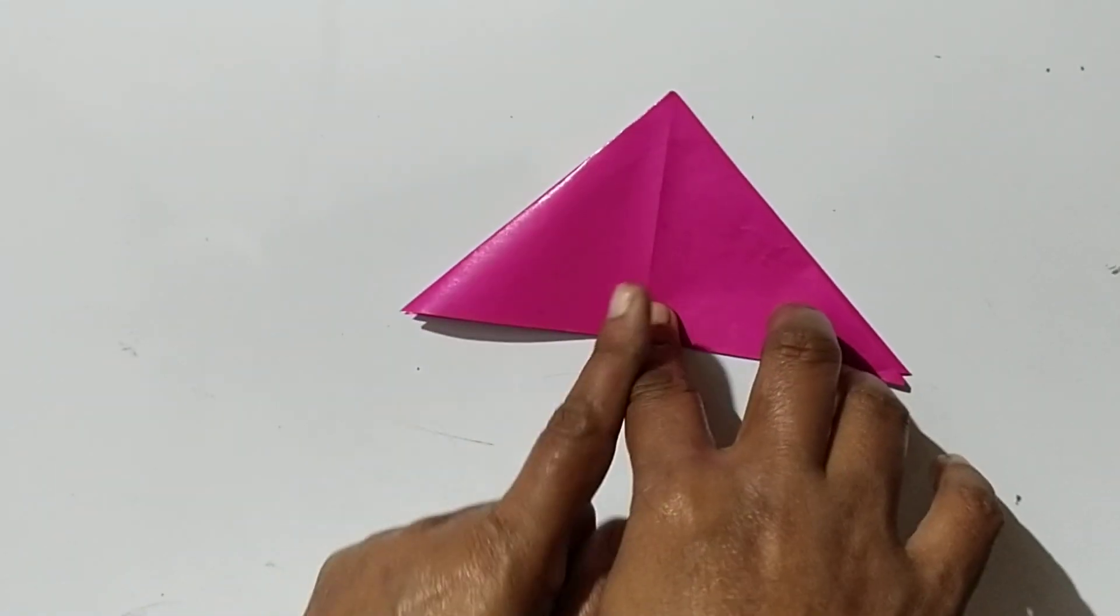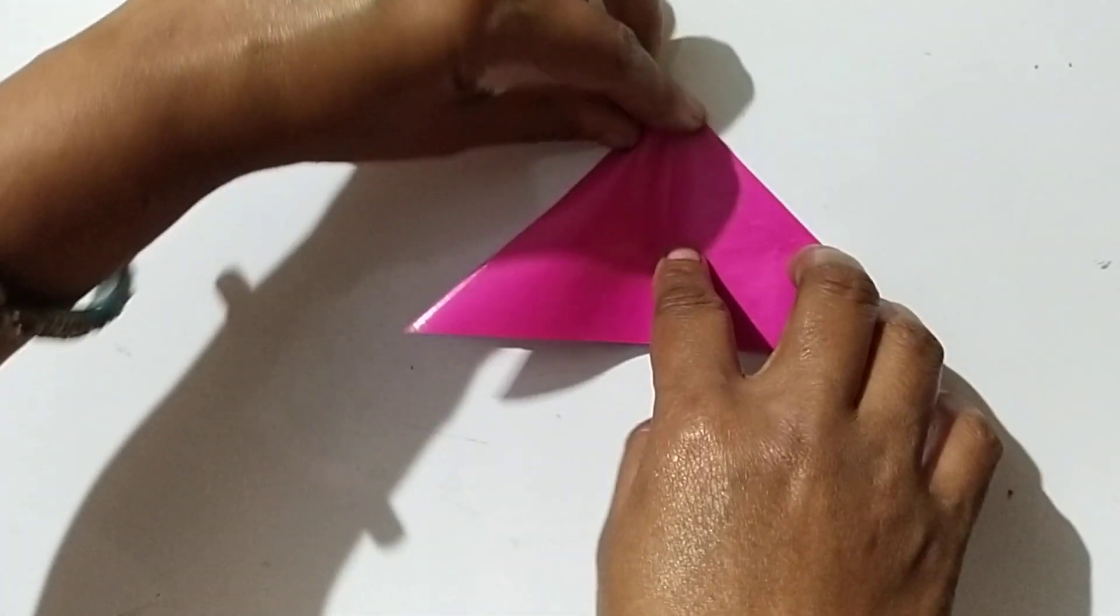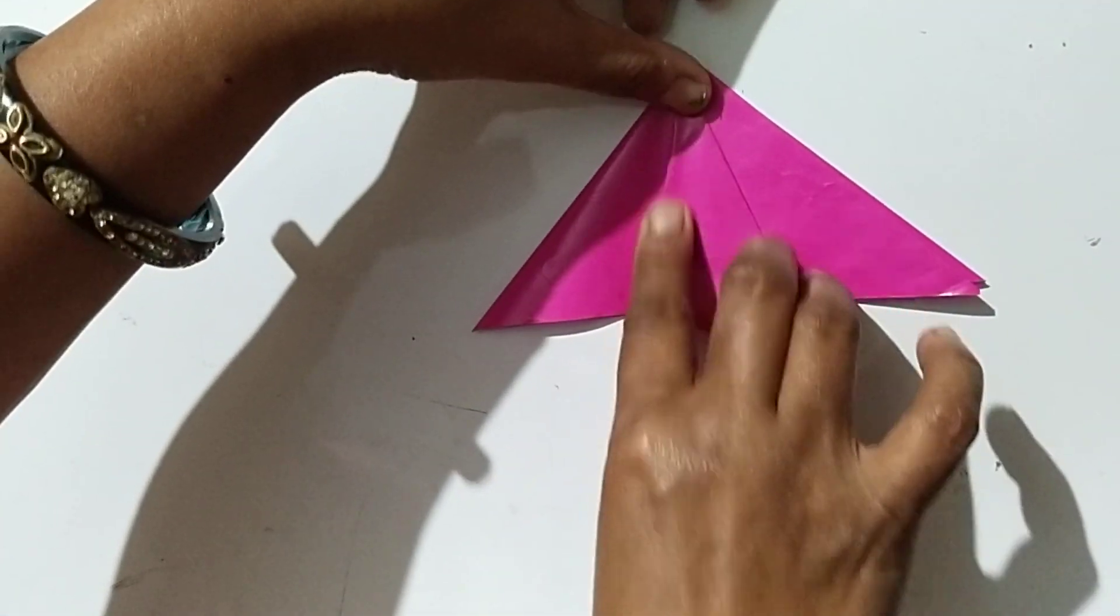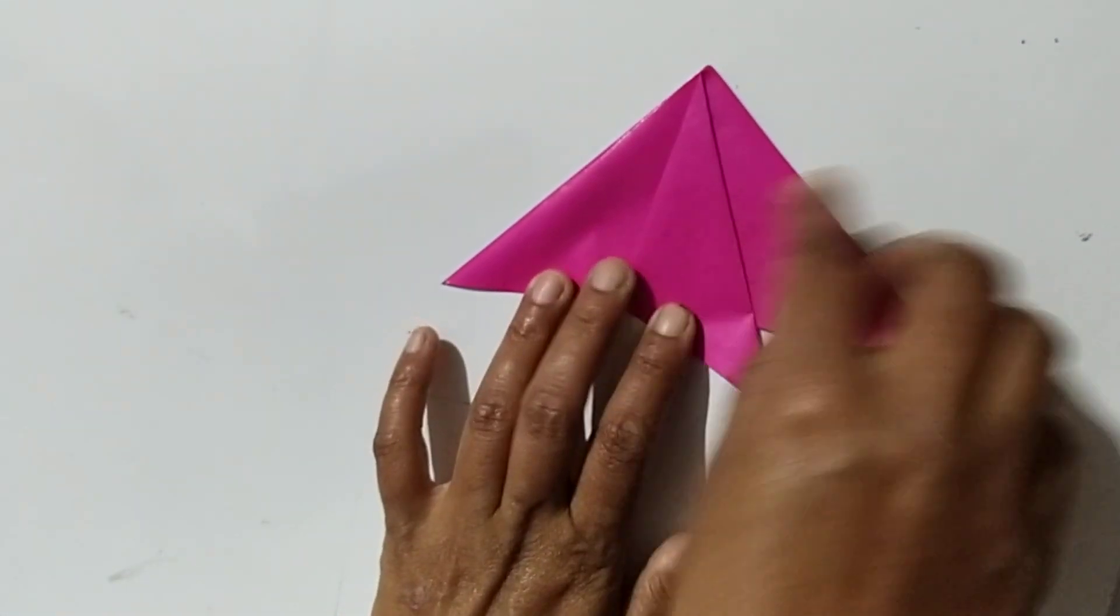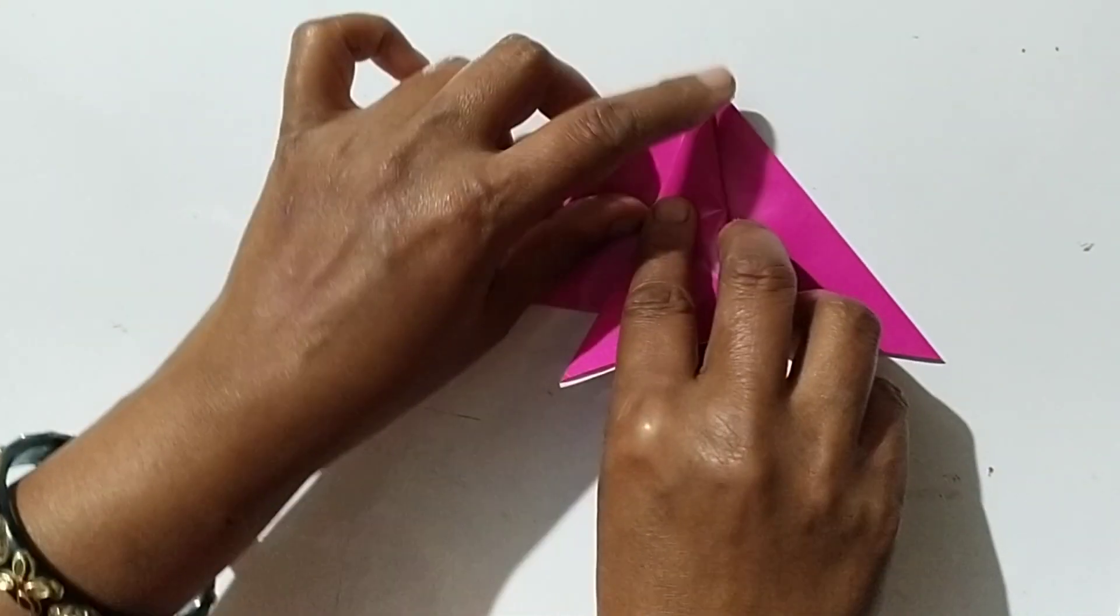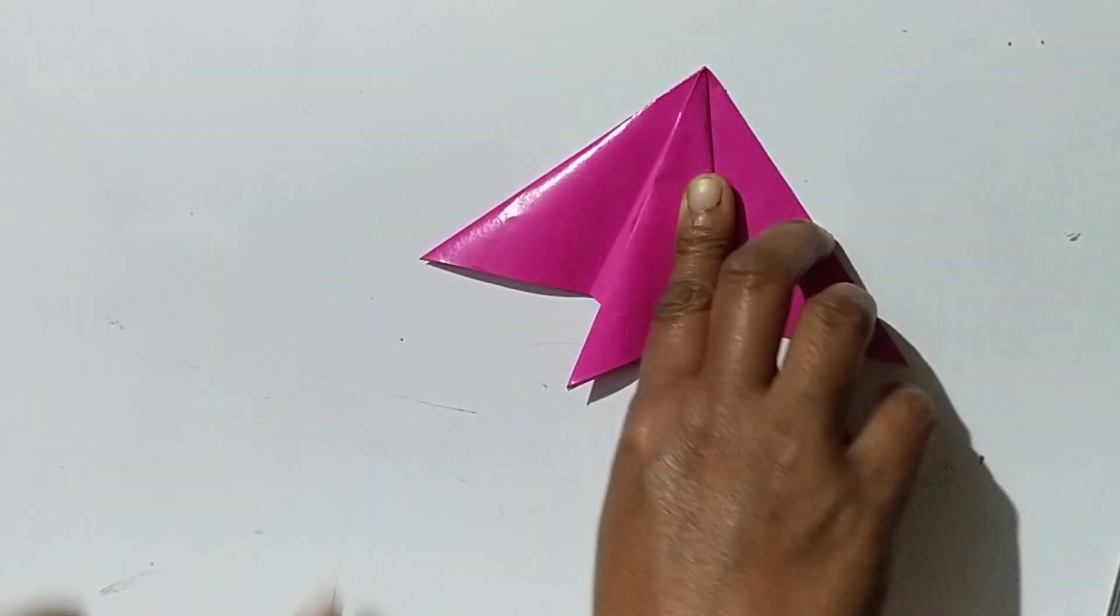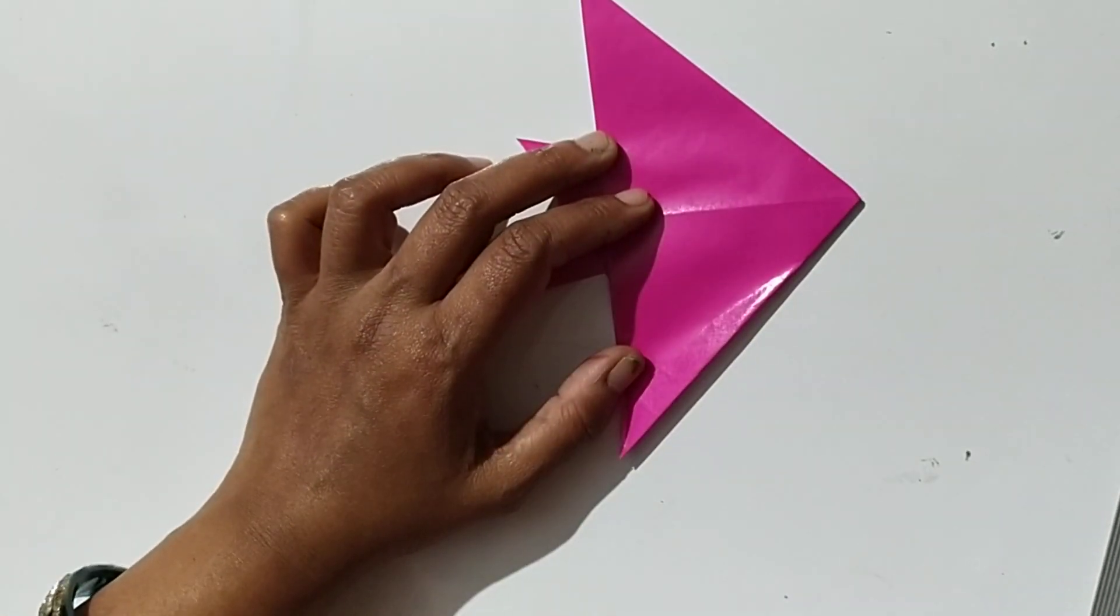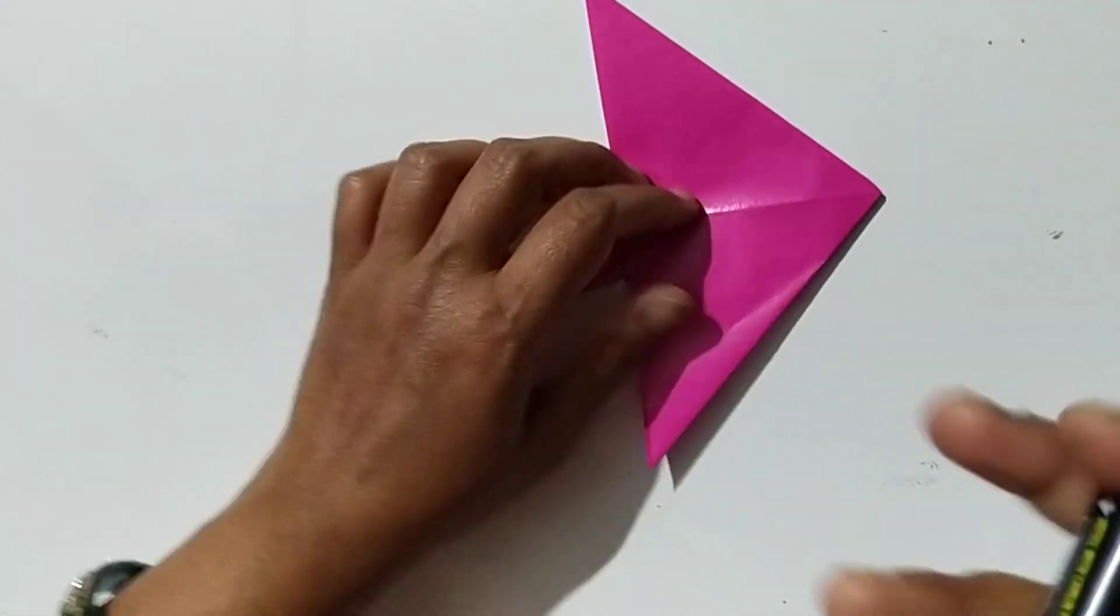Then fold the right corner of the upper layer to overlap the left flap. Then turn your page. Take a sketch pen and draw an eye.